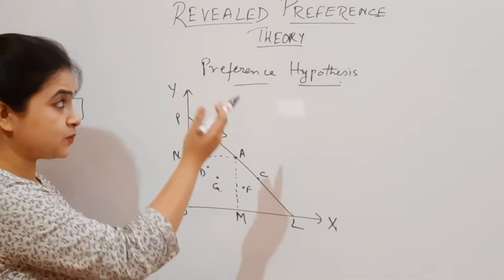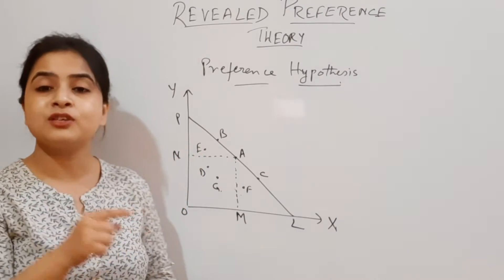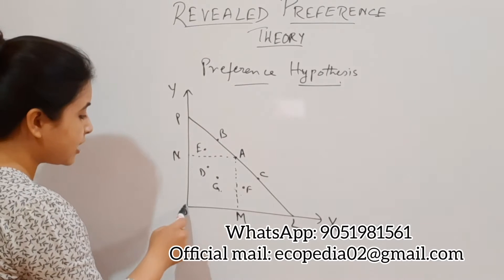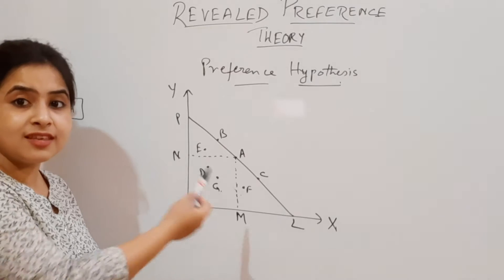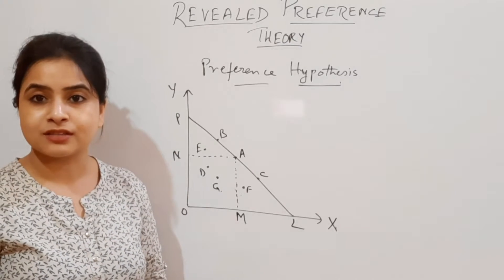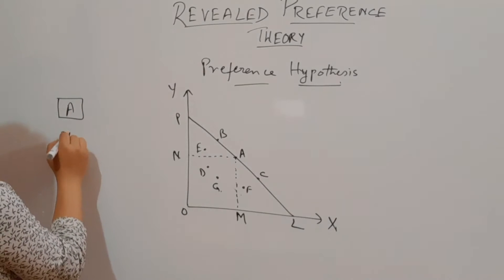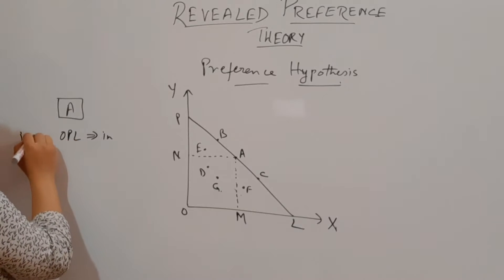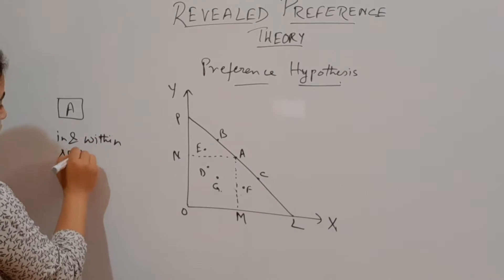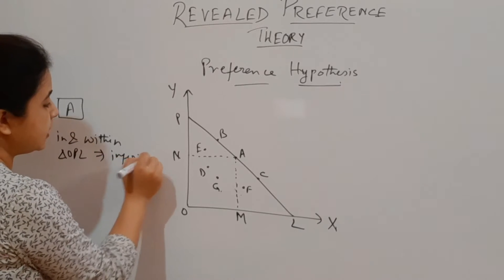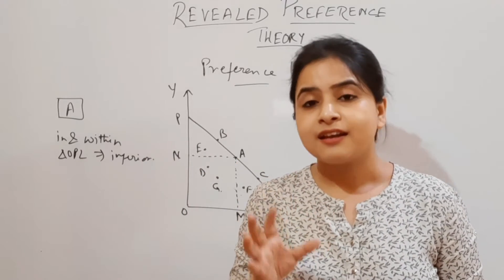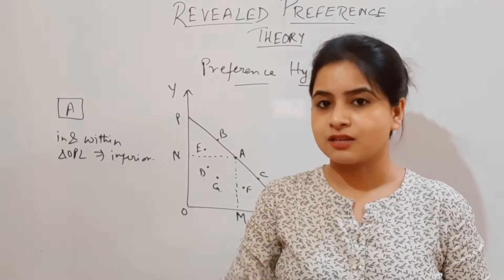Whenever the consumer reveals preference towards a particular bundle, that bundle becomes superior to all others, and all other bundles become inferior. So we can say that all points on the triangle OPL and all points within the triangle OPL are left out. All these points except point A are the inferior points. So all points in and within triangle OPL are inferior to point A.